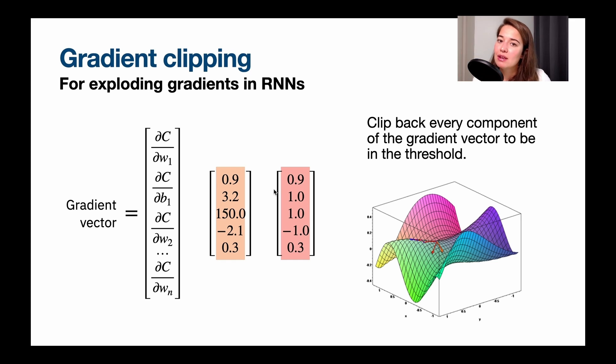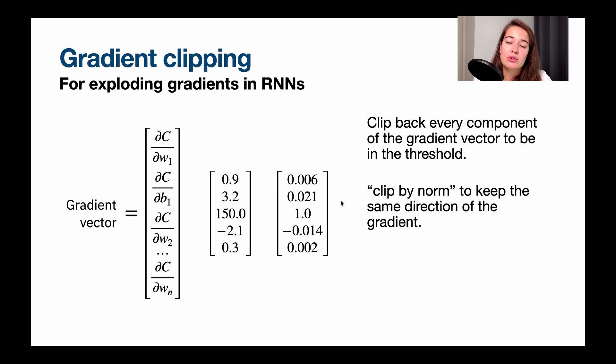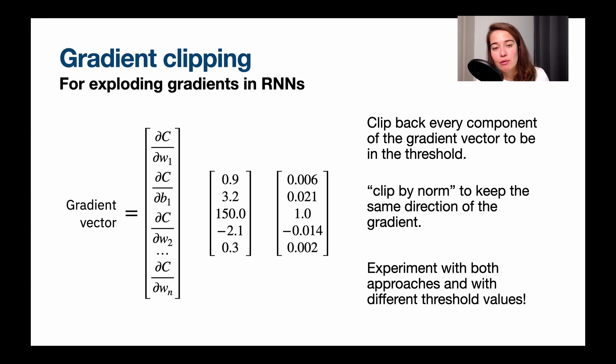just clip them to be in between a threshold, or use clipping by norm and keep the ratio in between the gradients while you are lowering the values to be in between the threshold and see which one works better for your network.